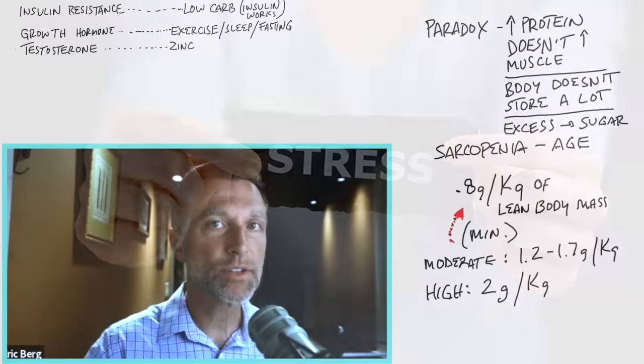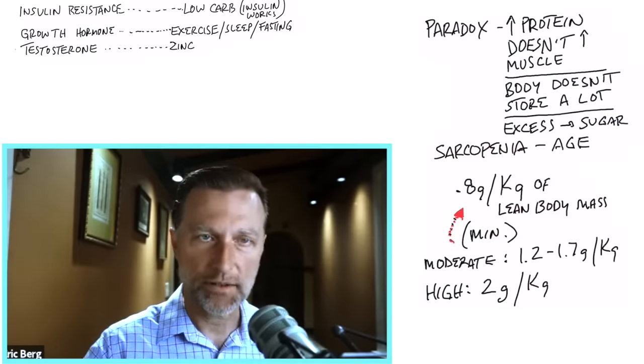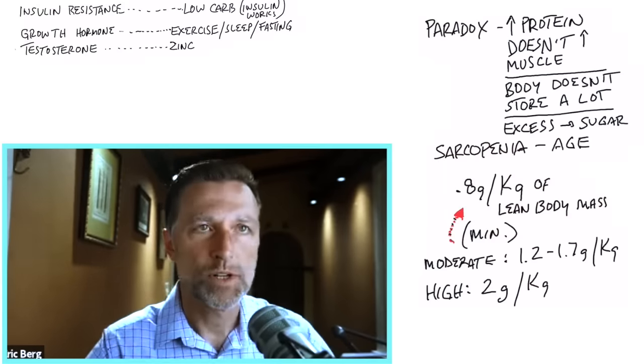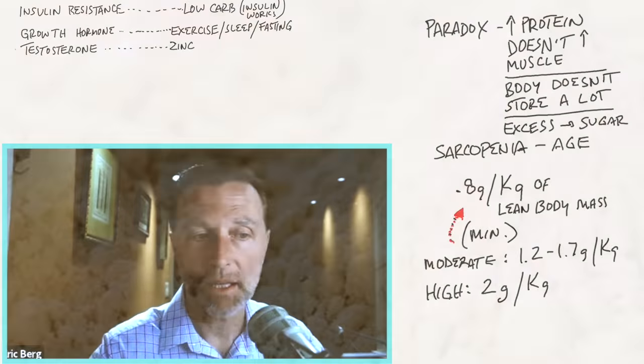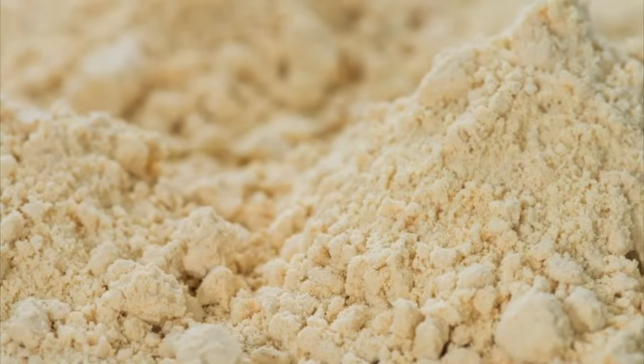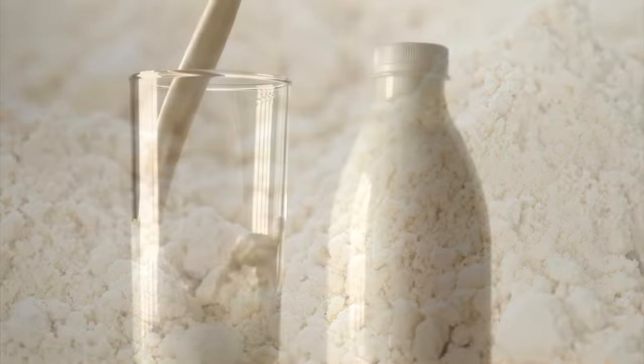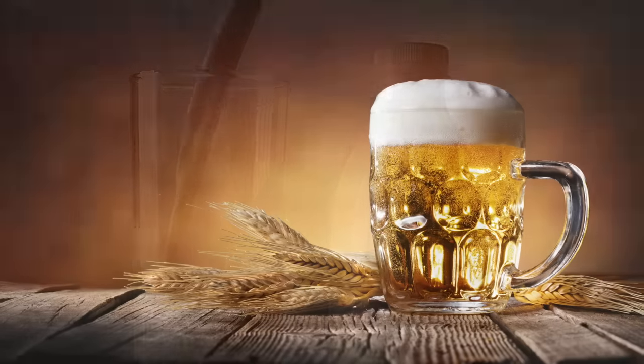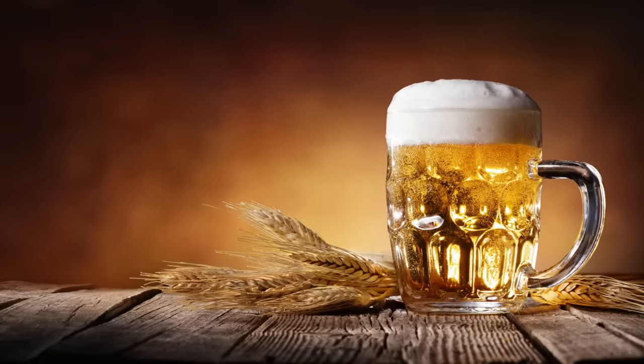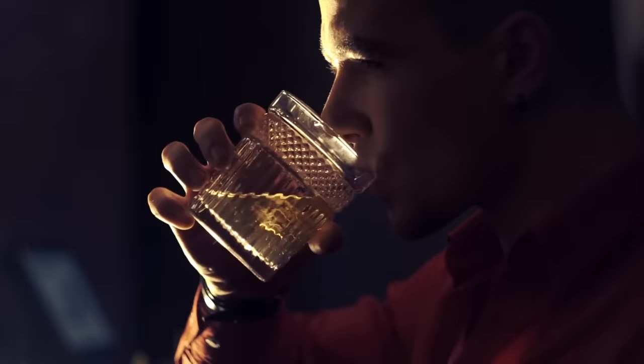The other thing that can inhibit testosterone is having too much estrogen. Now, where does that come from? Well, it mainly comes from a lot of the soy protein, isolate foods. Soy milk can do it. You also increase estrogen when you drink beer, and also consume alcohol.